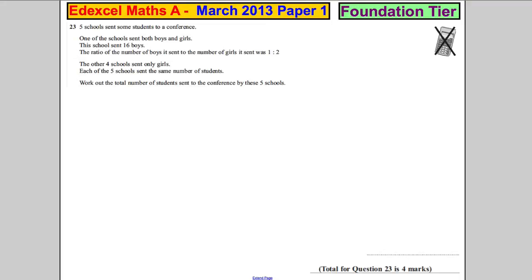Okay, so question 23. Five schools send some students to a conference. One of the schools sends both boys and girls. This school sent 16 boys. The ratio of boys it sent to girls was 2 to 1.